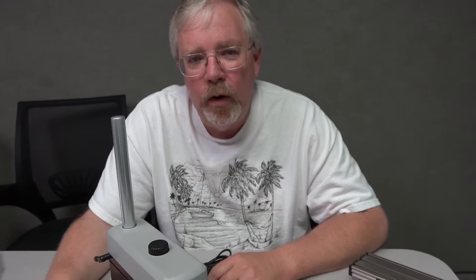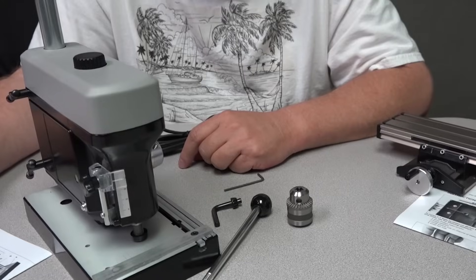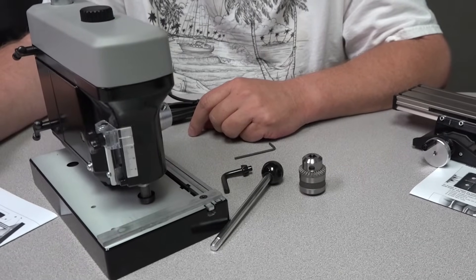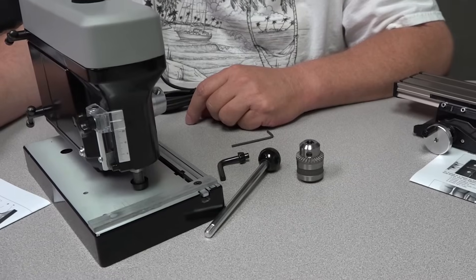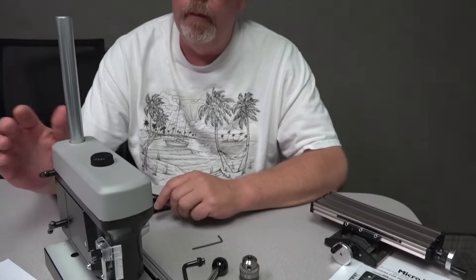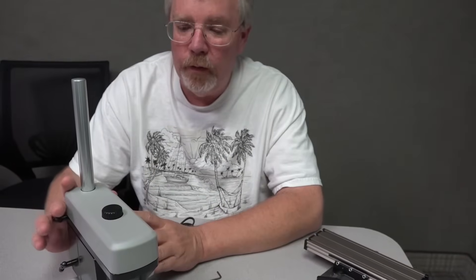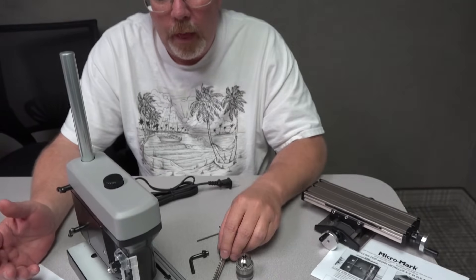Hi, I'm Vince. We're in the Micromark workshop today and I'm going to show you my little friend here. It's the Micromark Precision Drill Press number 81631, made in Japan for Micromark. It comes packed with a whole bunch of features which I'm going to discuss. Basically the way you're looking at it is the way it came out of the box.